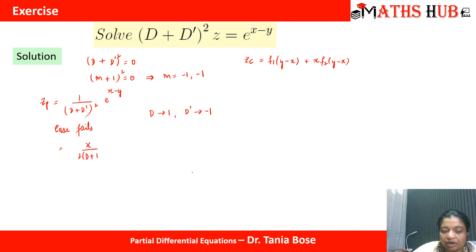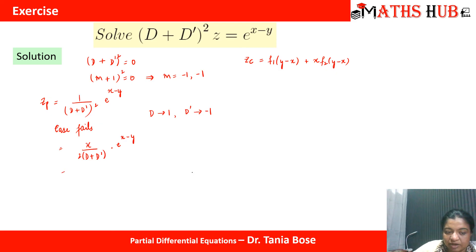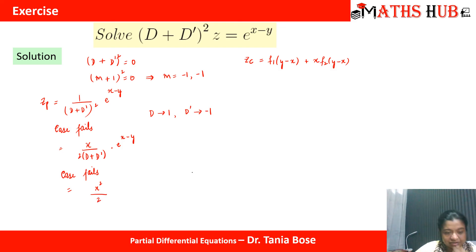The denominator becomes 2(D + D') · e^(x−y). Again replacing D with 1 and D' with −1 gives 0 — another case failure. So we multiply by another x, giving x², and take the derivative of the denominator again, which finally gives 2. So we have x²/2 · e^(x−y).